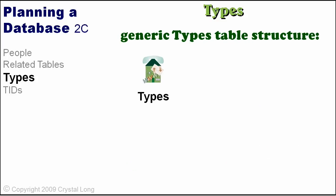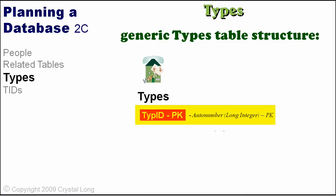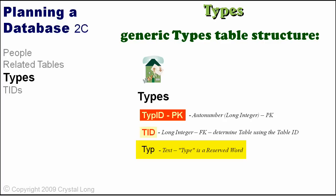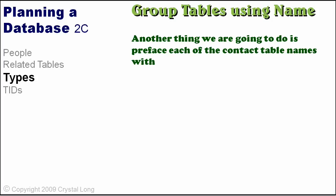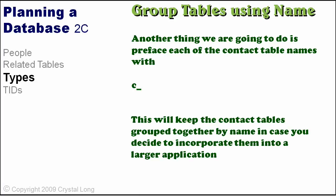Here is our generic types table structure. TypeID will be an auto-number primary key. Typ, without the E, is a text field — the reason we drop the E is because TYPE is a reserved word. Each of the tables in our system will be assigned a unique number. TID stands for Table ID. TID will be stored in types to provide a way to know which records correlate to specific tables. We are also going to prefix each of the contact tables with C underscore, which will keep them grouped together by name in case you decide to incorporate them into a larger application.